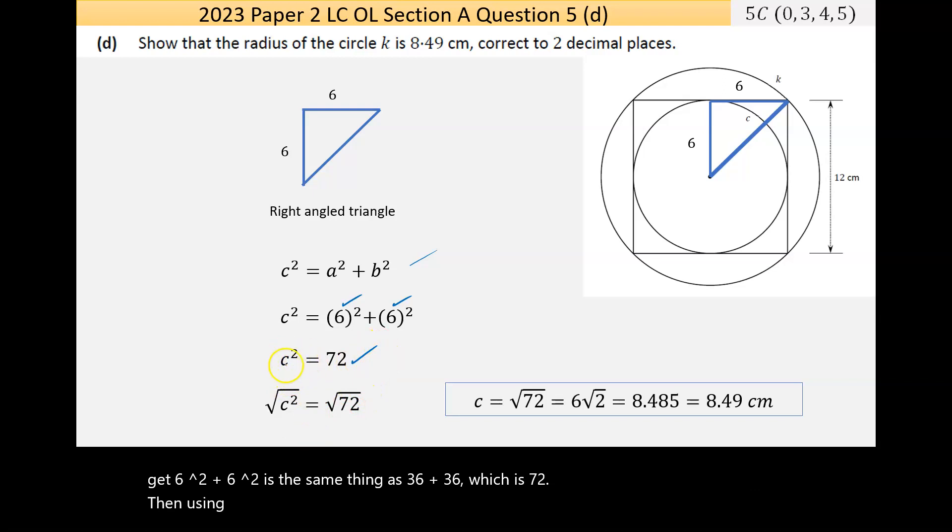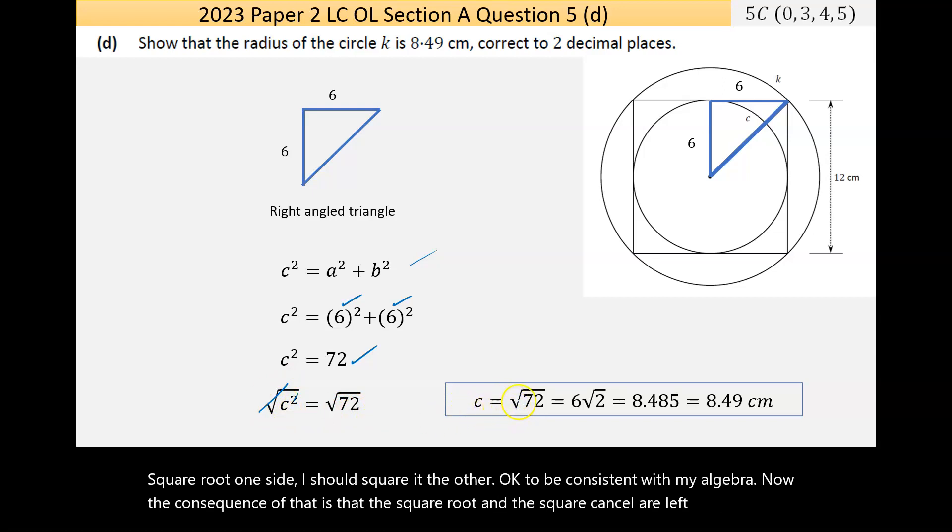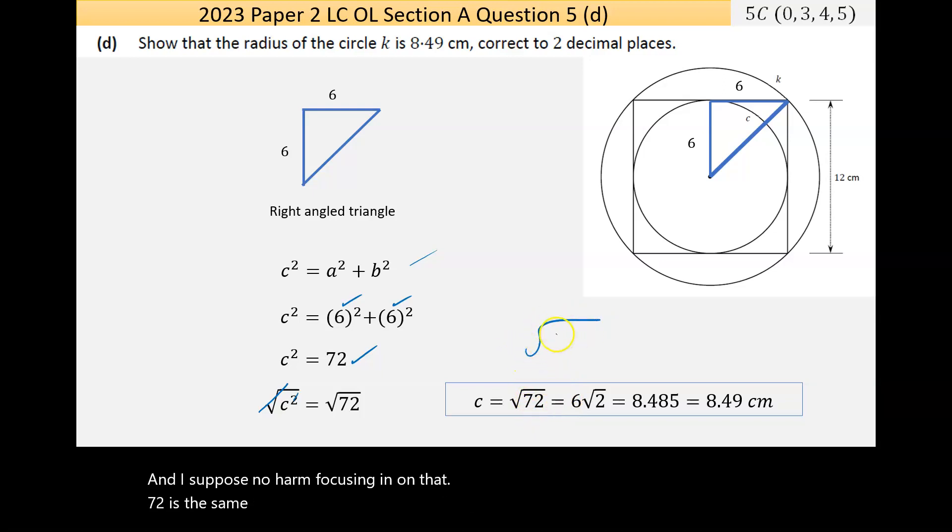Then using algebra to get rid of the square—because I want c, not c²—I'm going to do the opposite operation to it, so I'm going to square root it. If I square root one side I should square root the other to be consistent with my algebra. Now the consequence of that is that the square root and the square cancel are left with c equals √72. Now the calculator can simplify that to 6√2, and I suppose no harm focusing in on that. 72 is the same thing as the square root of 36 times 2, which you're allowed to express numbers differently under a square root. Now there's a rule of square roots that two things multiplied under a root can be written as two separate square roots, and then the square root of 36 is the same thing as six times root 2, which is better expressed as 6√2.